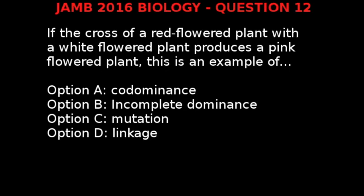JAM 2016 Biology question 12. If the cross of a red flowered plant with a white flowered plant produces a pink flowered plant, this is an example of: option A, co-dominance; option B, incomplete dominance; option C, mutation; option D, linkage.